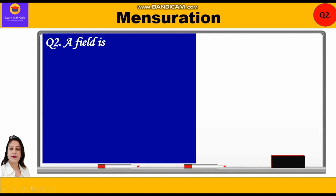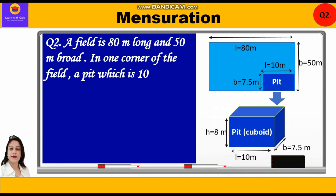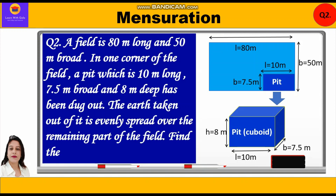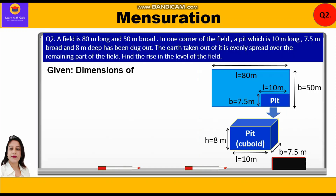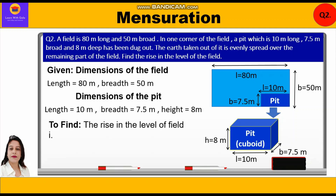Now let's move to question number two. A field is 80 meters long and 50 meters broad. In one corner of the field, a pit which is 10 meters long, 7.5 meters broad, and 8 meters deep has been dug out. The earth taken out is evenly spread over the remaining part of the field. Find the rise in the level of the field. Dimensions of the field: length = 80 m, breadth = 50 m. Dimensions of the pit: length = 10 m, breadth = 7.5 m, height = 8 m. We have to find the rise in the level, i.e., the height raised.